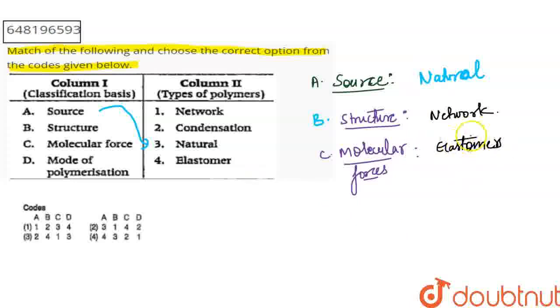So elastomers basically, you have polymers we can stretch them. We can stretch them like elastic, and if we release the force, they return to original shape. For example, it will be neoprene. Bunas.